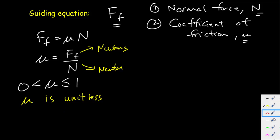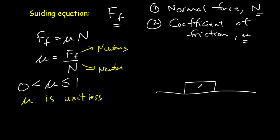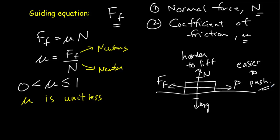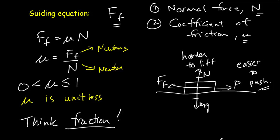Consider an object on a flat surface where the normal force and weight are the same size. If we push it at constant velocity, the force of friction equals the push force. To lift the object, you need a force equal to the weight — the normal force — which is always bigger than the friction force needed to push it. So it's always harder to lift an object than to push it. The coefficient of friction tells you how much easier it is to push than to lift — think of it as a fraction: what fraction is the force of friction of the normal force?